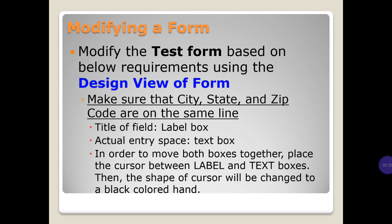Modifying a form: modify the test form based on the following requirements using the design view of the form. Make sure that city, state, and zip code are on the same line. In order to move both boxes together, place the cursor between the label and the text boxes, then the shape of the cursor will change to a black-colored hand.